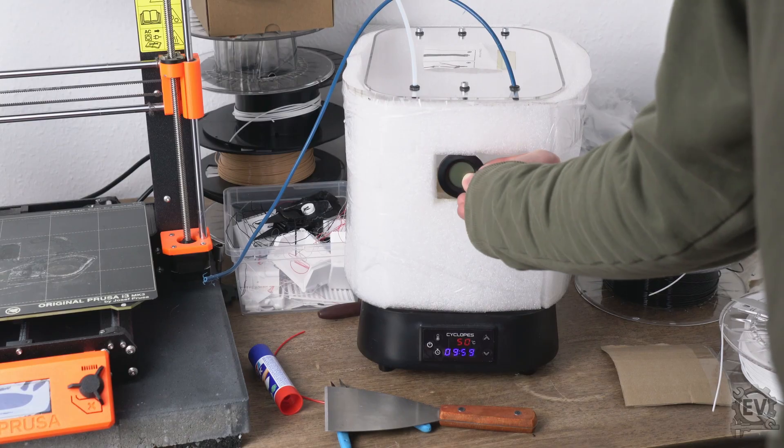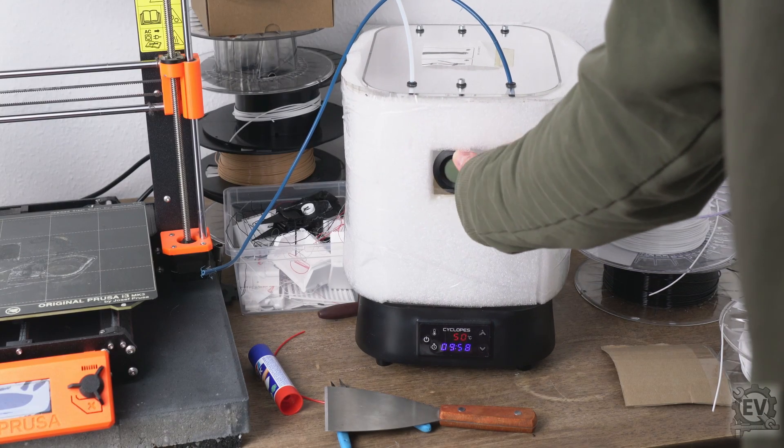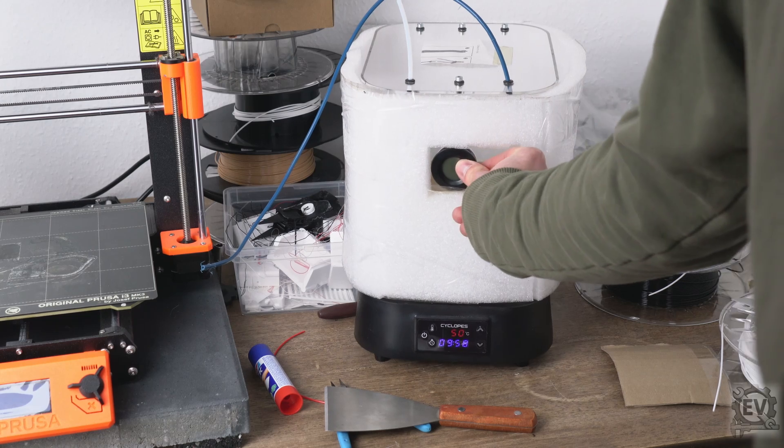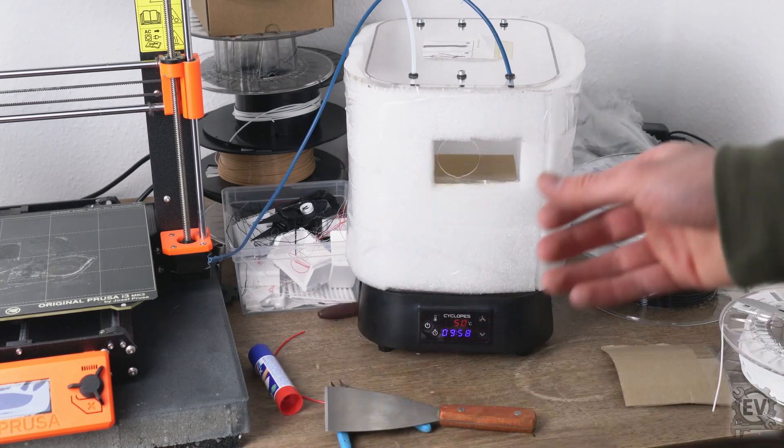Using a Peltier element I repeatedly reduced the temperature until the water from the air condensed on an aluminium element and then let it warm up again to the room temperature. After a short time it was possible to collect the first water and remove it from the air.